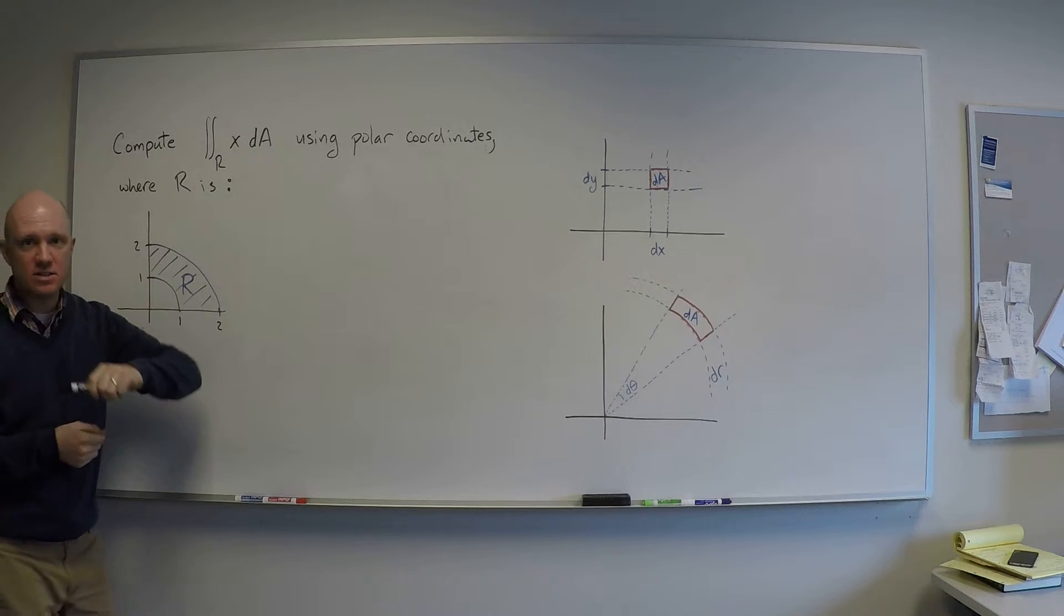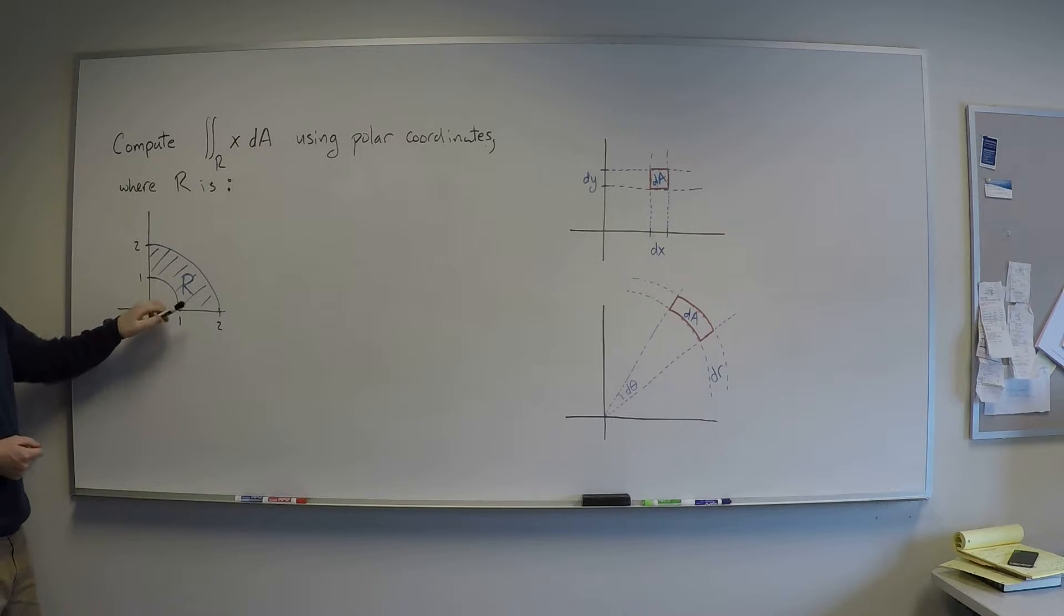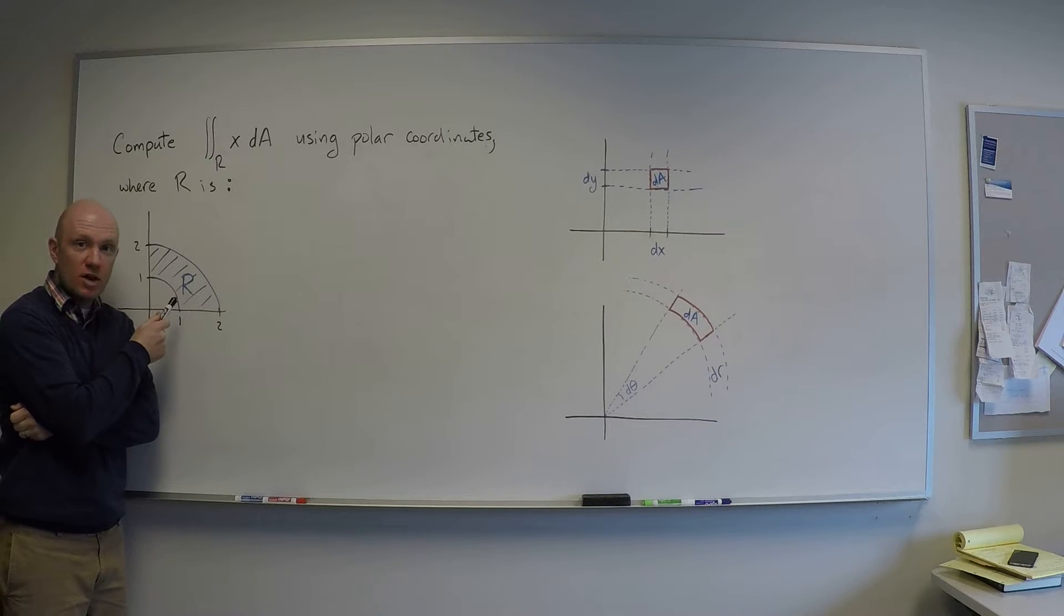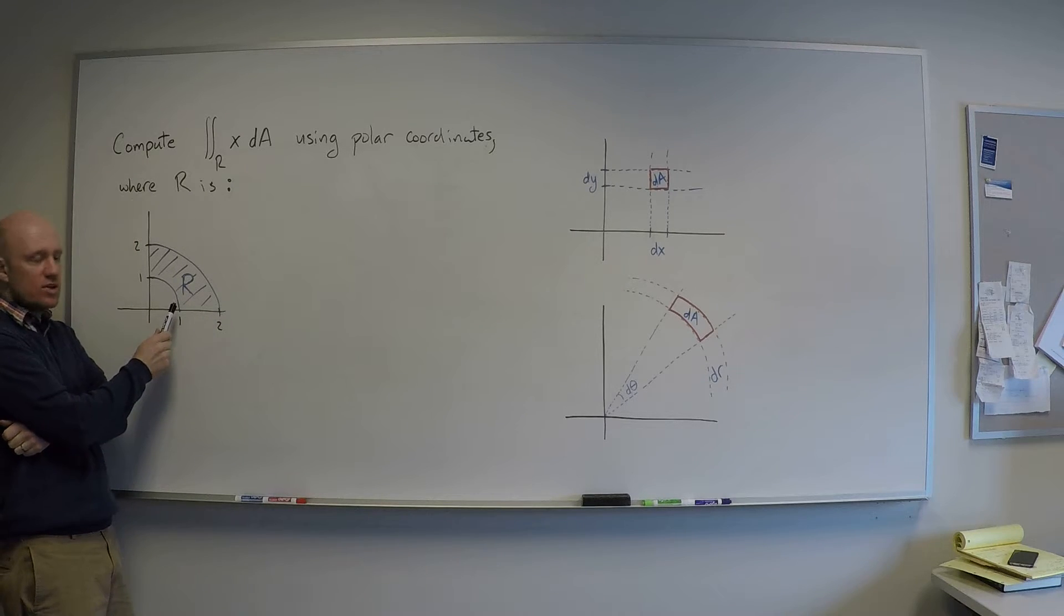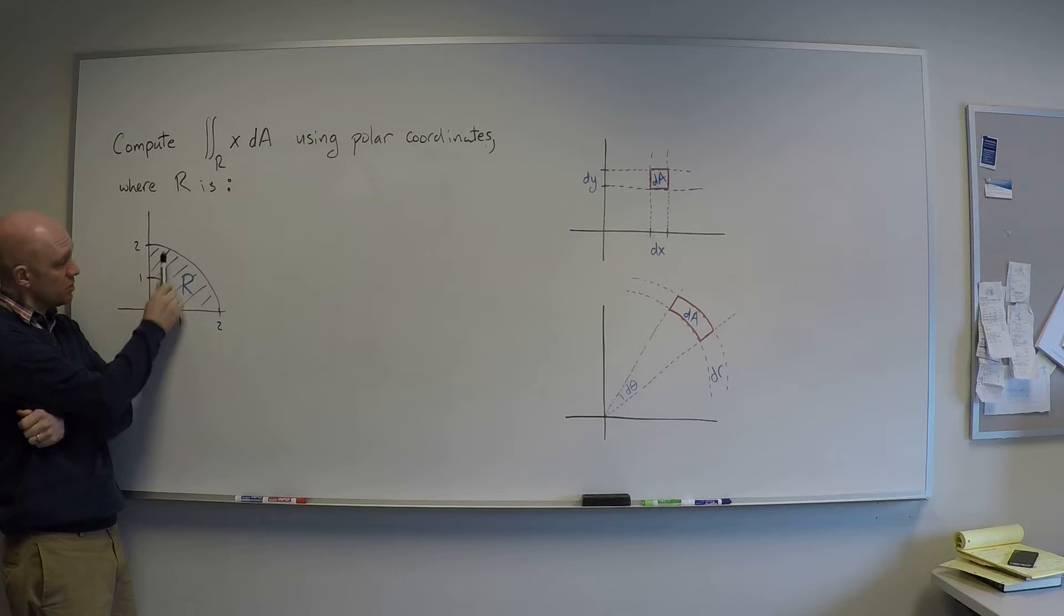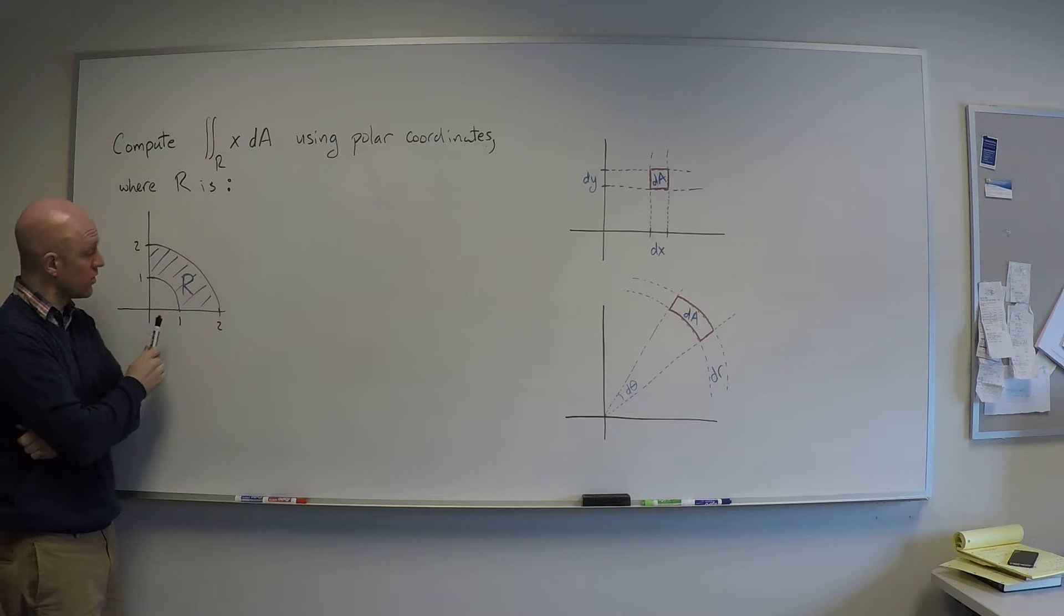Let's integrate the function x over this region. This region is a portion of an annulus. Now if you try to set this integral up in Cartesian coordinates you're not going to have a very good time because if you try to define the y bounds for instance you have to start at a different place here and there. So you have to split it up into actually two separate integrals.